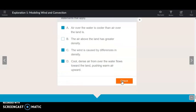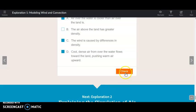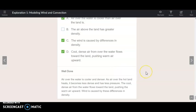It's going to talk in a super robotic voice. Air over the water is cooler and denser. As air over the hot land heats, it becomes less dense and has less pressure. The cool, dense air from the water flows toward the land, pushing the warm air upward. Wind is caused by these differences in density.